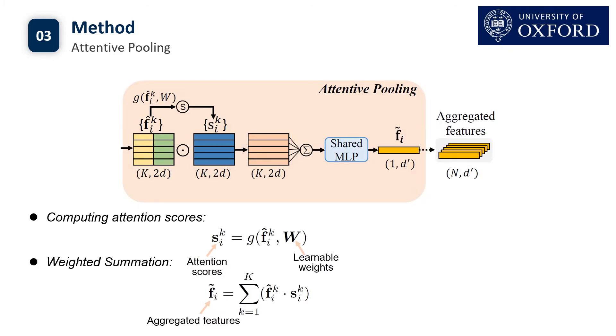We then use attentive pooling to aggregate the neighboring feature set instead of using max pooling or mean pooling to naively integrate the neighboring features, where the majority of the information has been lost. We turn to the attention mechanism to automatically learn important local features from the neighbor feature set.